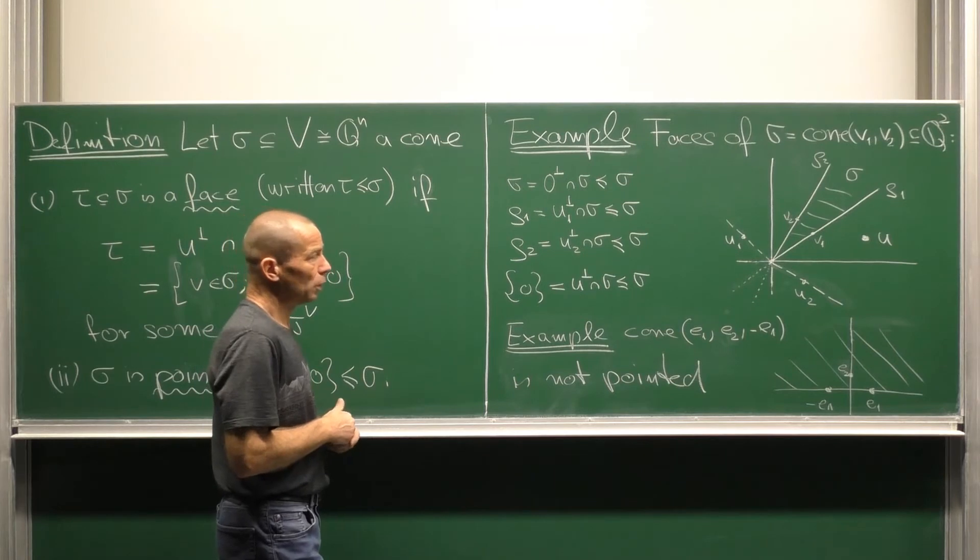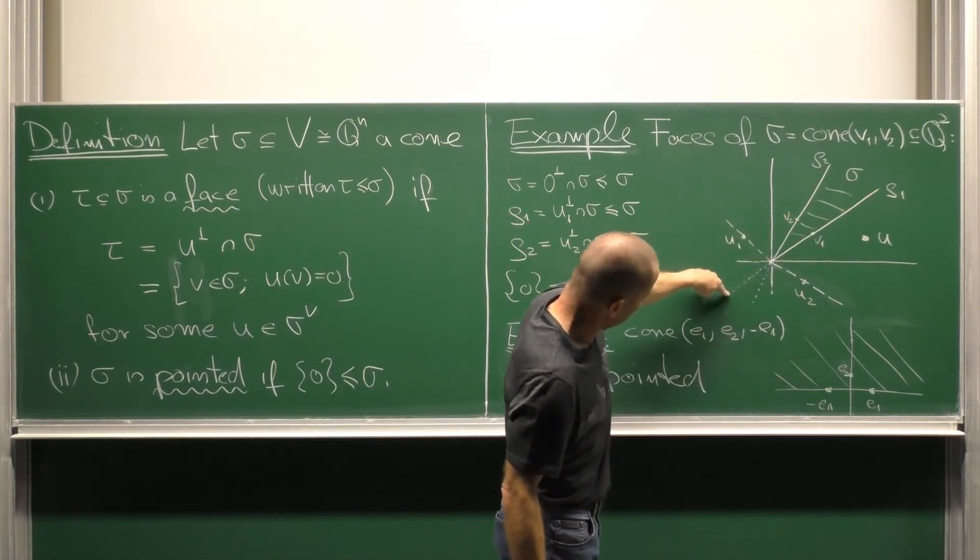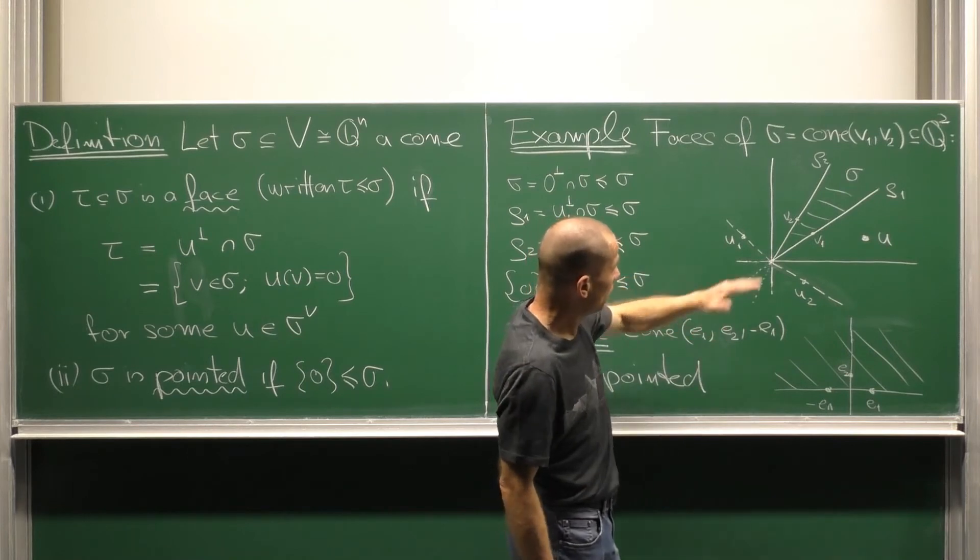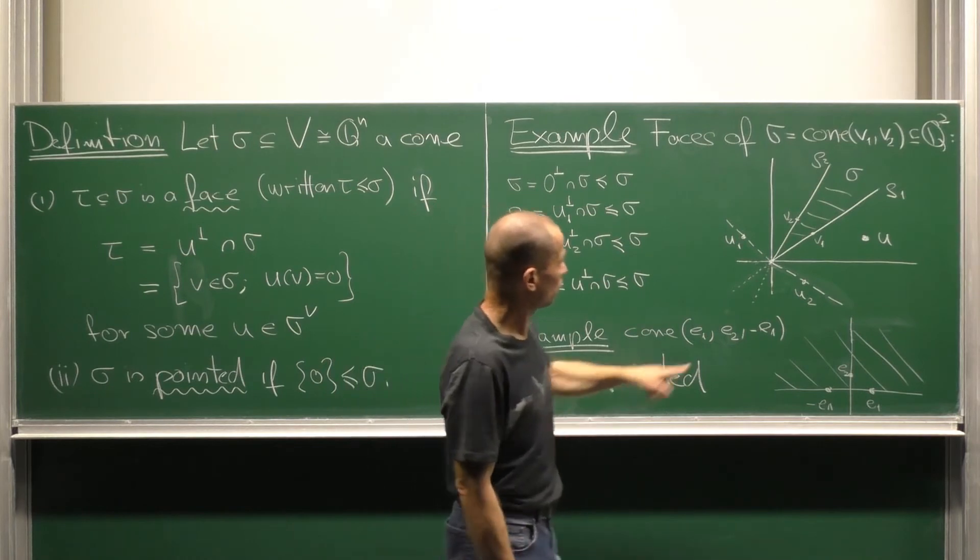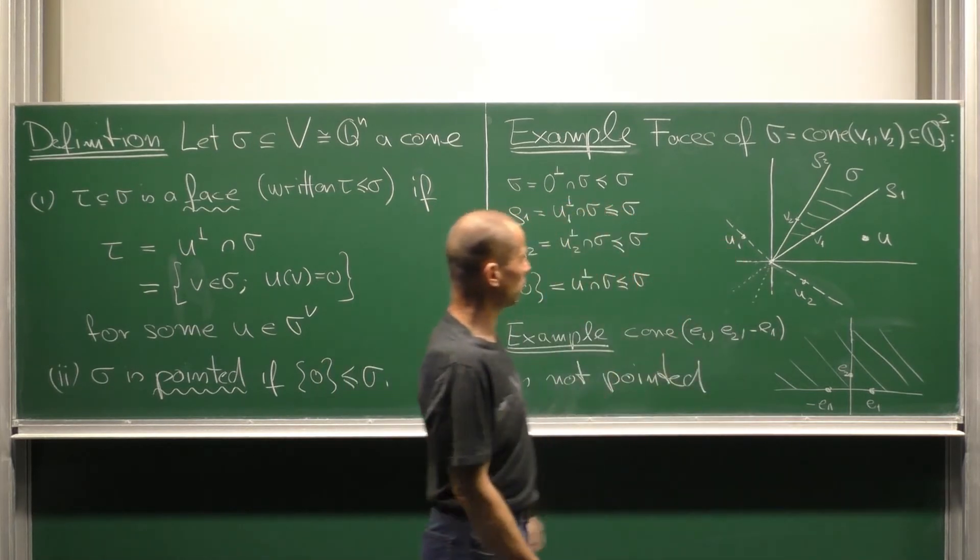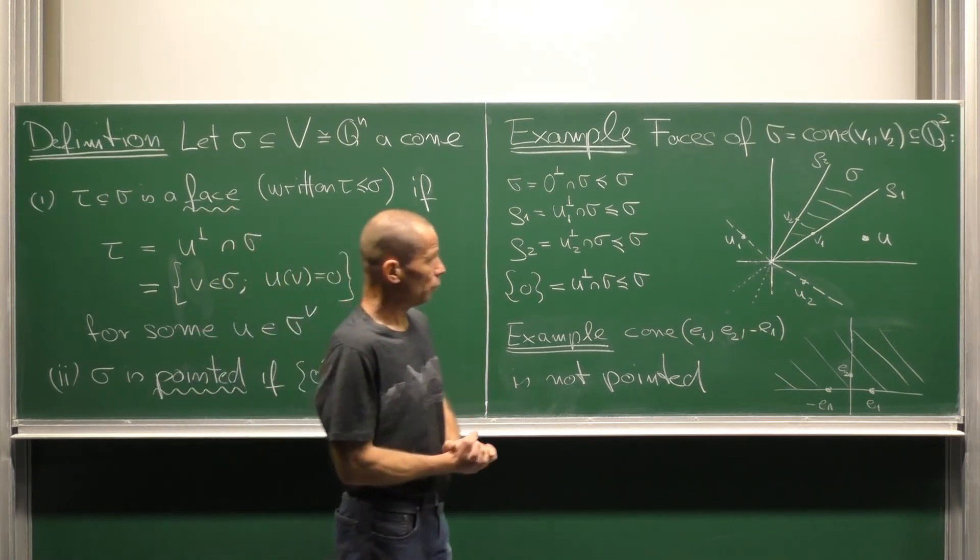Look at rho1. We need a linear form which vanishes along rho and is non-negative in this area. So this is one of the generators of the dual cone. Take u1. Similar we proceed with u2.